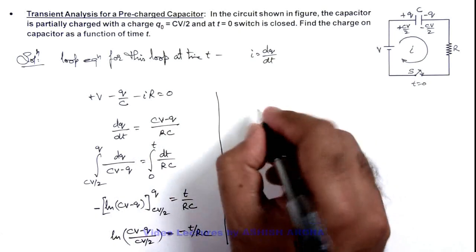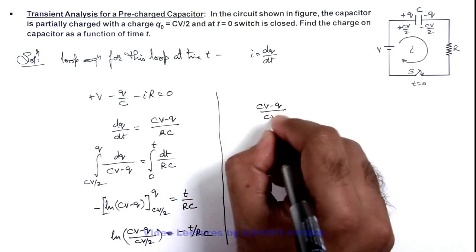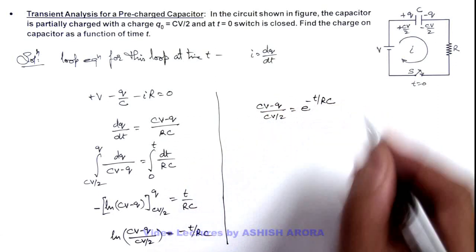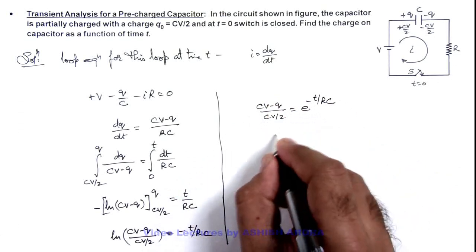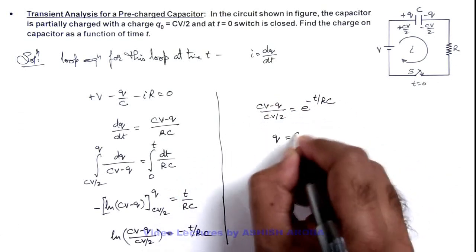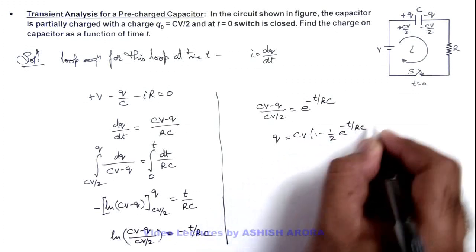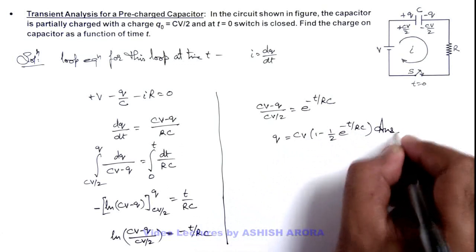We further continue: (CV - q)/(CV/2) equals e^(-t/RC). On simplifying, this gives us q = CV(1 - (1/2)e^(-t/RC)). That is the final result of our problem.